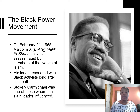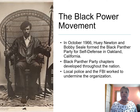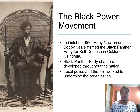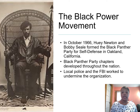In 1966, Carmichael announced the turn away from nonviolence towards Black Power. In October 1966, Huey Newton and Bobby Seale formed the Black Panther Party for Self-Defense in Oakland, California. The party developed chapters throughout the nation as well. Local police and the FBI worked to undermine this Black Power organization.